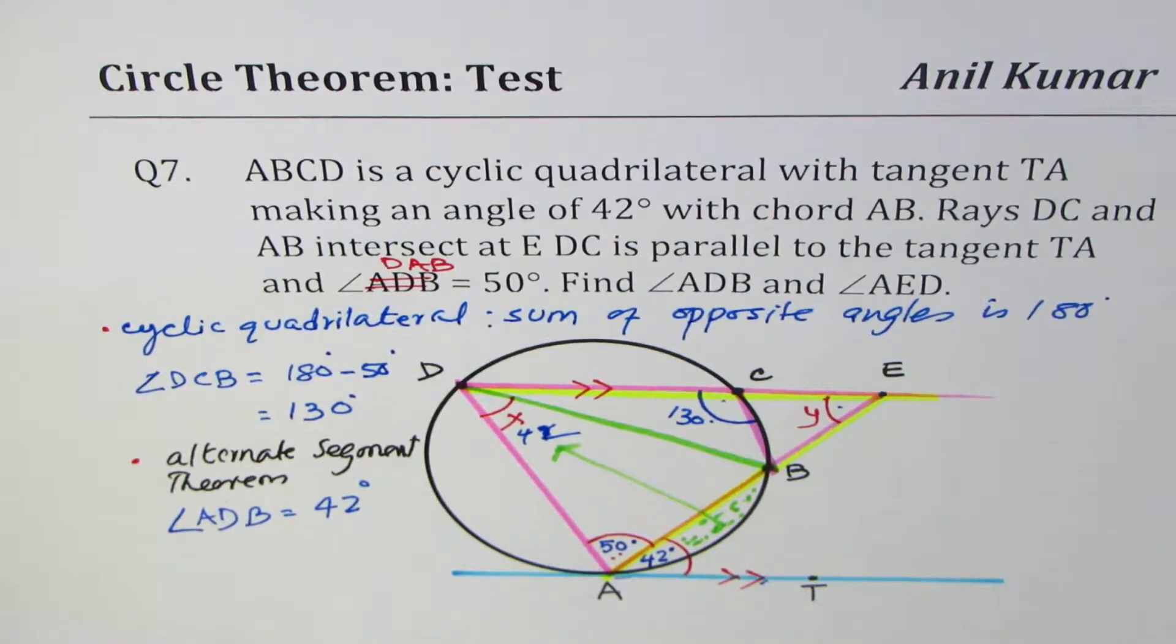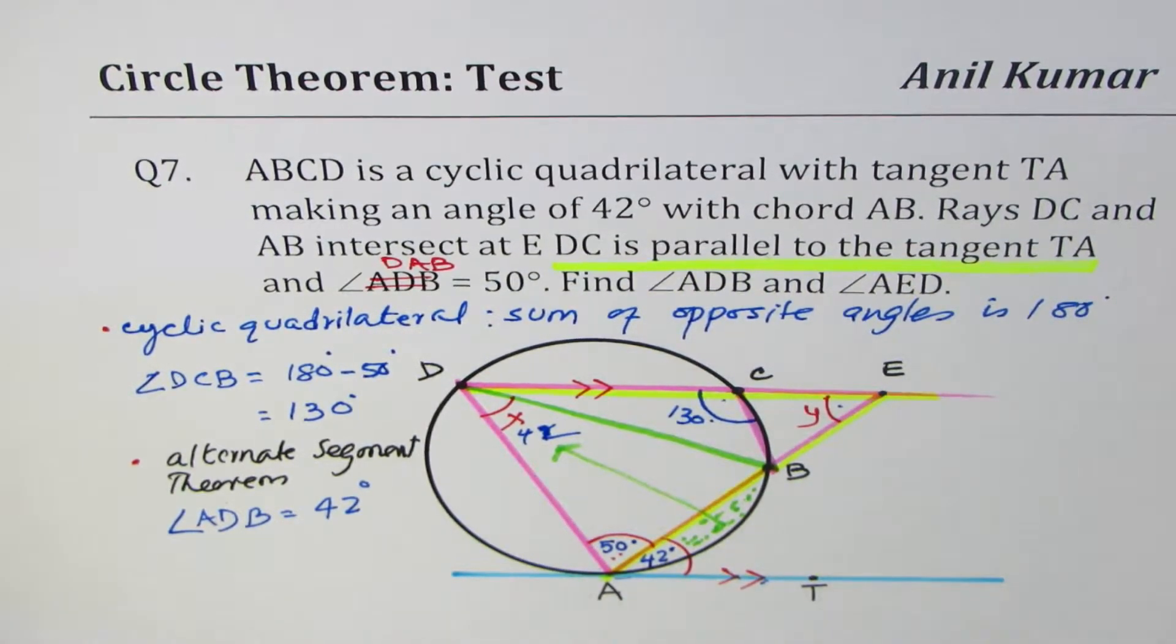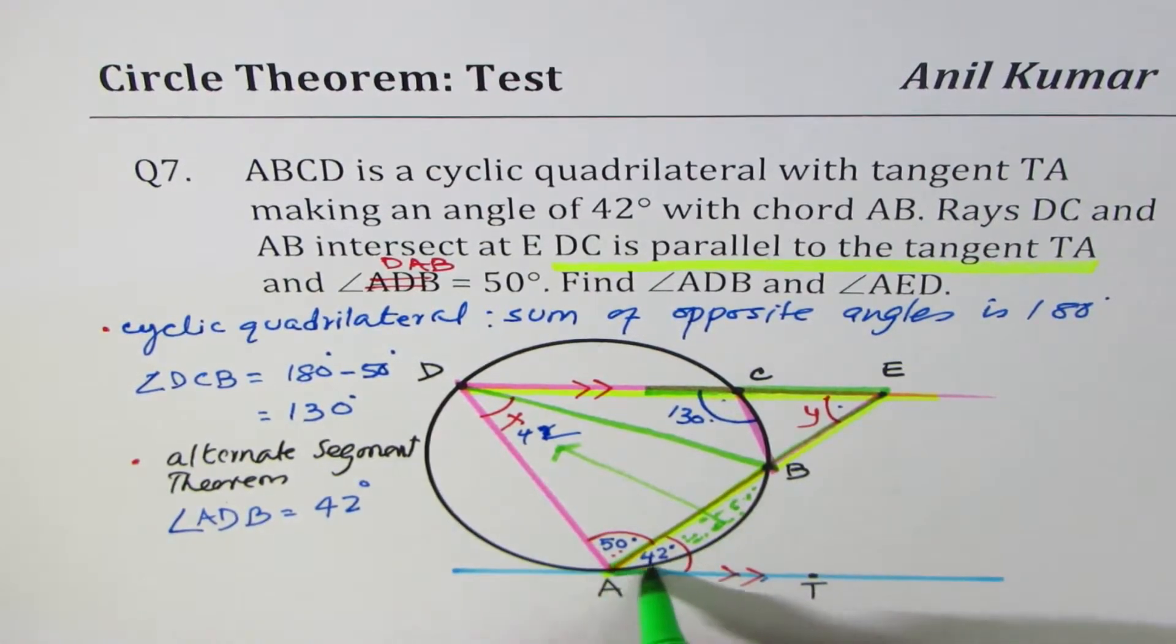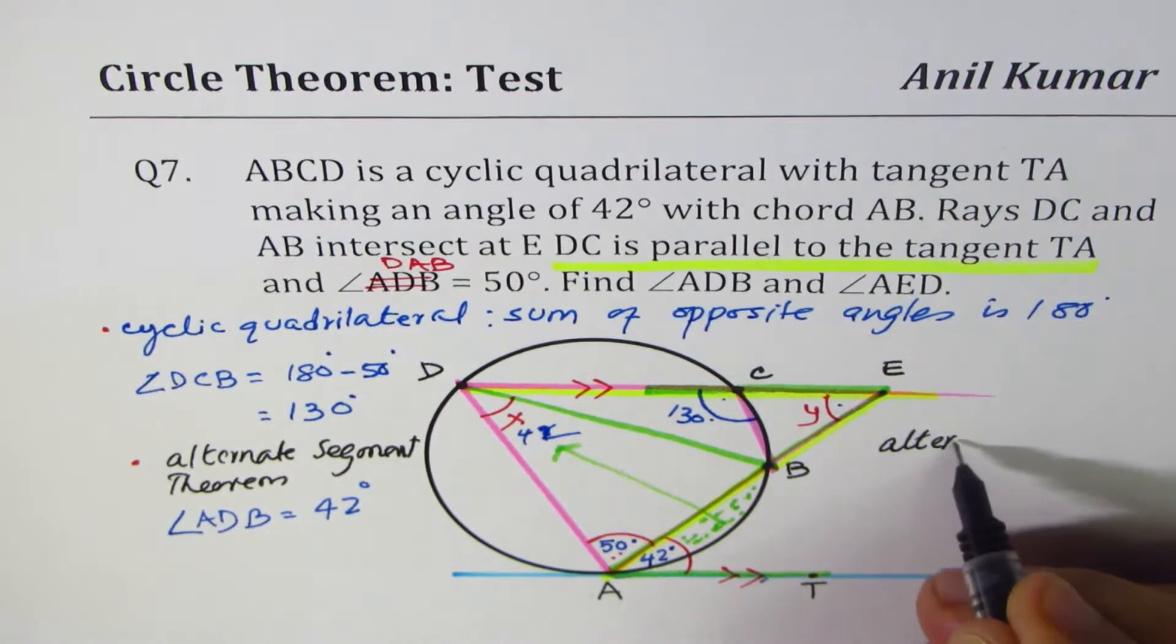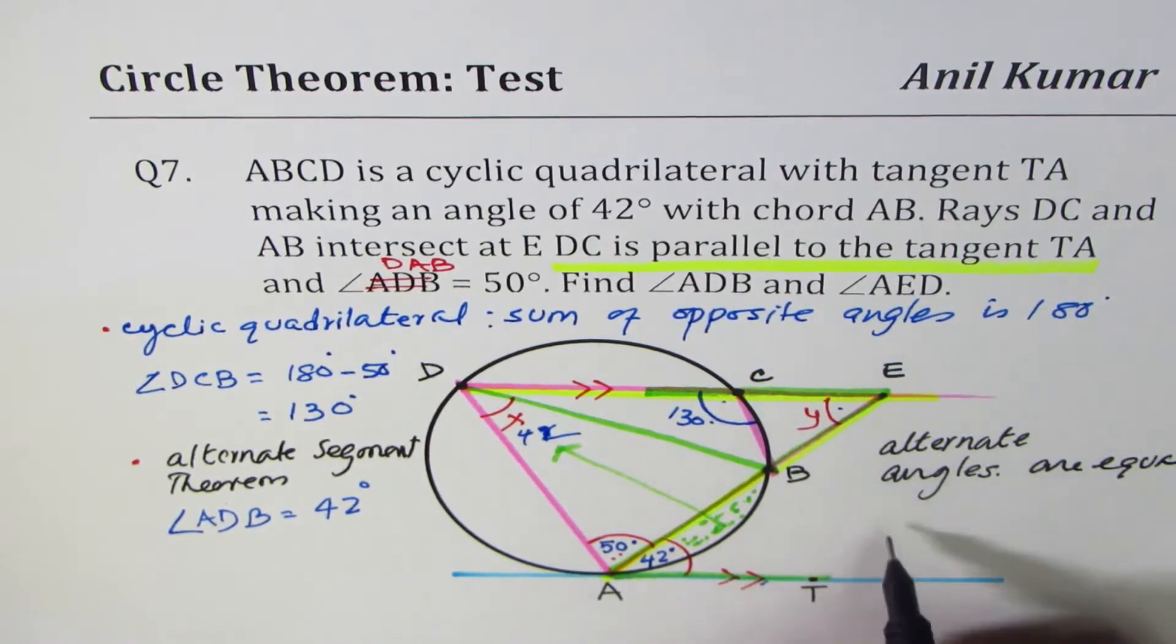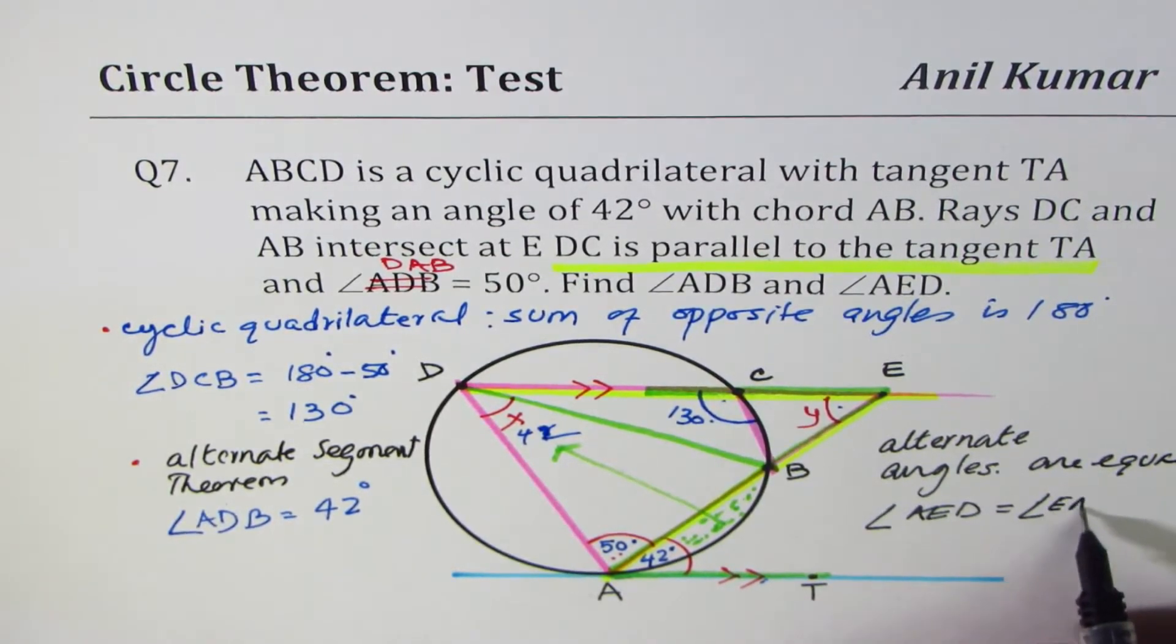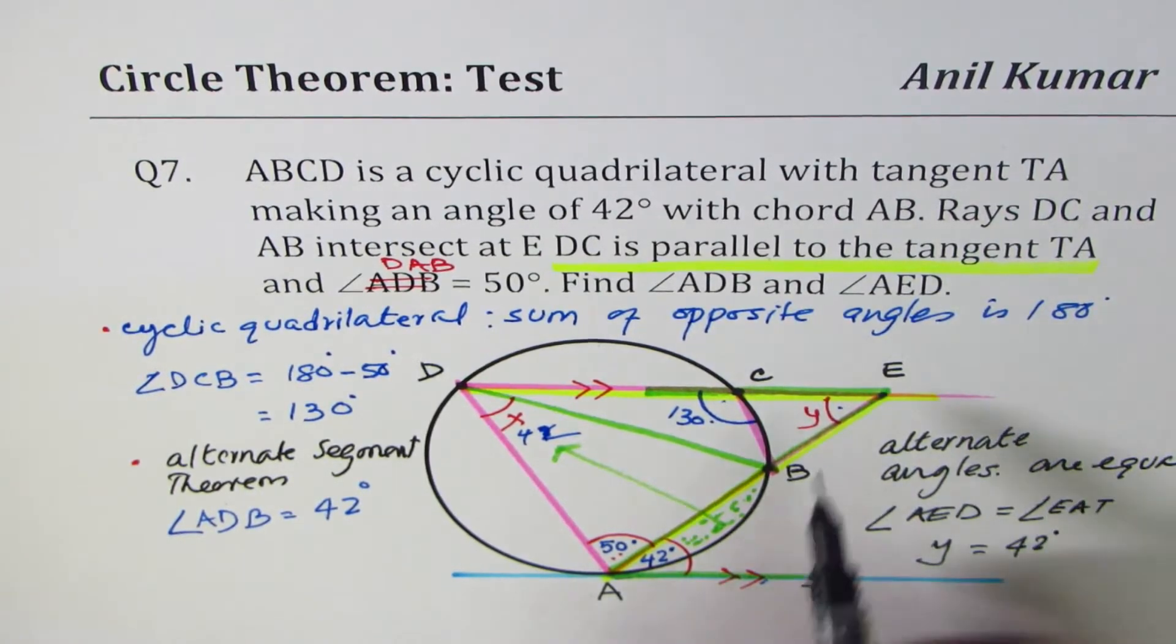How do we get y? We are given that the rays DC intersect and DC is parallel to the tangent TA. So what you can observe here is a Z pattern. So that Z pattern indicates that we are talking about alternate angles. So in parallel lines, alternate angles are equal. And therefore, the angle AED should be equal to the angle EAT. And therefore, y, or this angle, is equal to 42 degrees. So this angle is also 42 degrees.